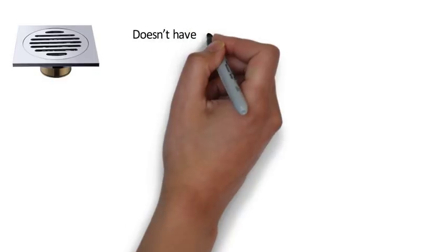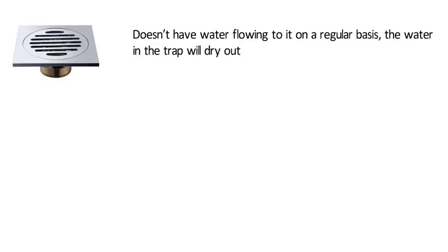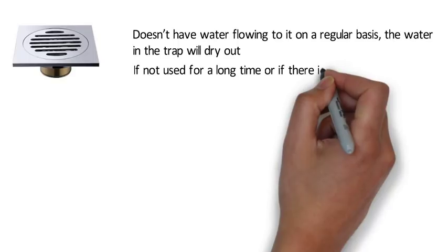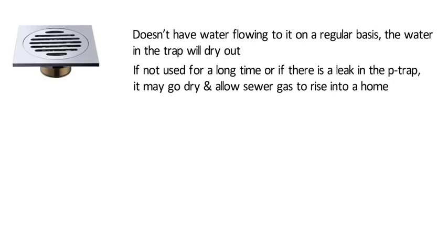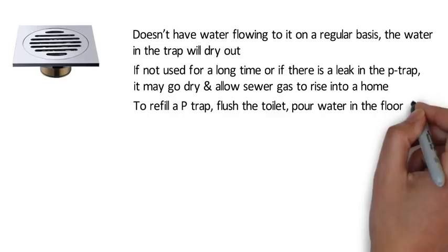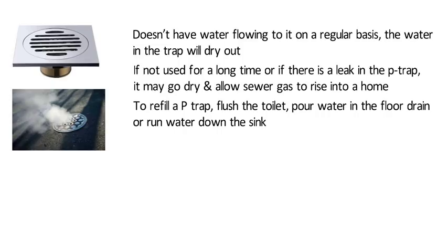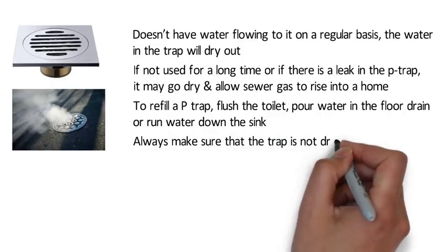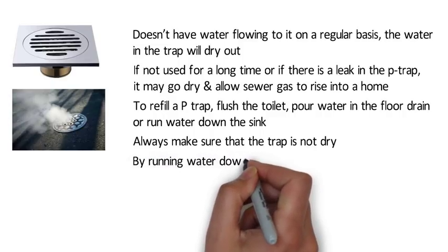If a floor drain doesn't have water flowing to it on a regular basis, the water in the trap will dry out. If a drain, sink or toilet is not used for a long time, or if there is a leak in the P trap, it may go dry and allow sewer gas to rise into a home. To refill a P trap, flush the toilet, pour water in the floor drain, or run water down the sink. Then check to make sure the sewer gas has stopped coming into the building. If sewer gas continues, a repair or other maintenance may be needed. Whenever you encounter a strange odor in any room where there is a drain, always make sure that the trap is not dry. This is usually a quick fix that can be remedied by running water down the drain and filling the trap back up with water.